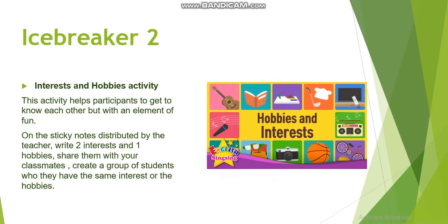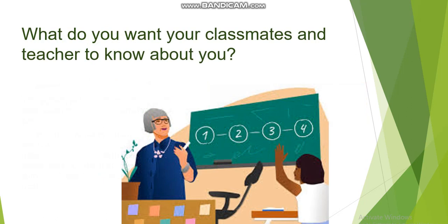The second activity is interests and hobbies, where each one of you has to write down or tell about two interests and one hobby. Then we try to create a group of students who have the same interests and hobbies so we can share with each other. By end of these activities you can also tell your classmates and teacher about your summer vacation, your old or new school, what you are planning to be in the future, and so on.